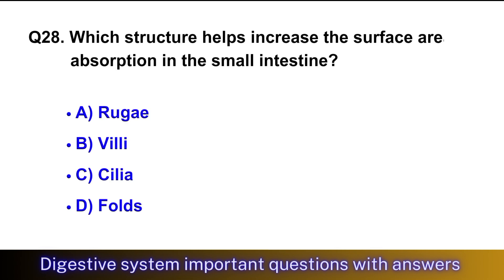Question No. 28: Which structure helps increase the surface area for absorption in the small intestine? The right option is option B, villi.